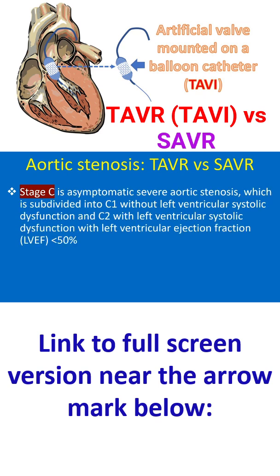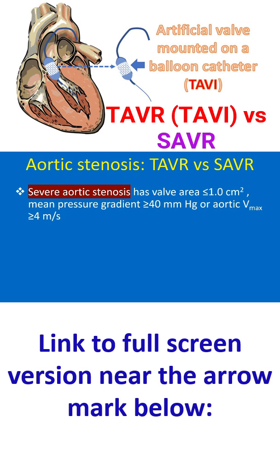Stage C is asymptomatic severe aortic stenosis, subdivided into C1 without left ventricular systolic dysfunction, and C2 with left ventricular systolic dysfunction with LVEF less than 50%. Severe aortic stenosis has valve area less than or equal to 1 square centimeter, mean pressure gradient more than or equal to 40 mmHg, or aortic Vmax more than or equal to 4 meters per second.